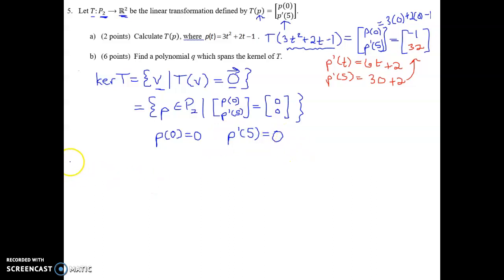Now, if we set up just a generic polynomial in P2, so that'd be some number A times T squared plus some number B times T to the first plus some constant. So anything in P2 has this general form where A, B, and C are some numbers.